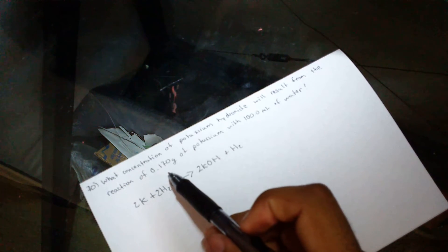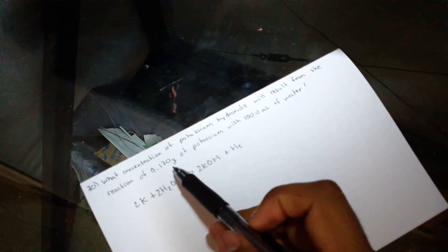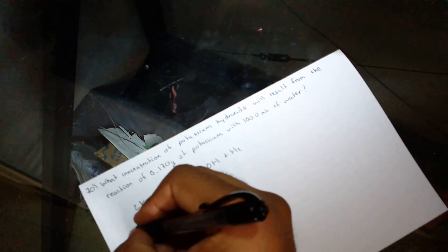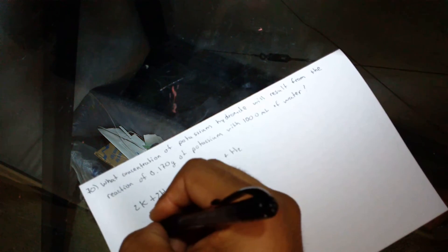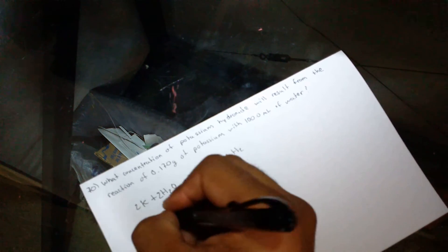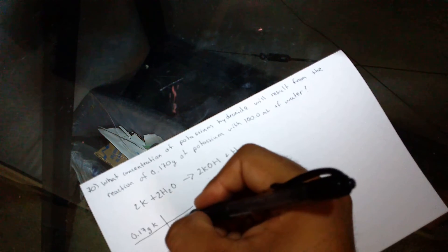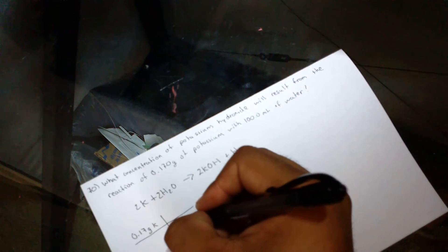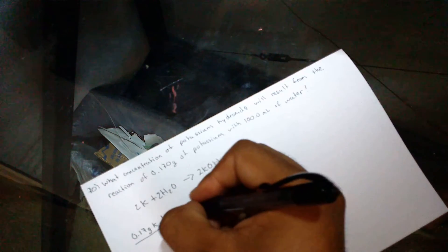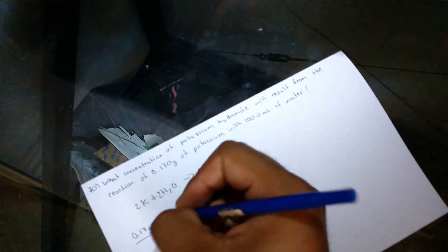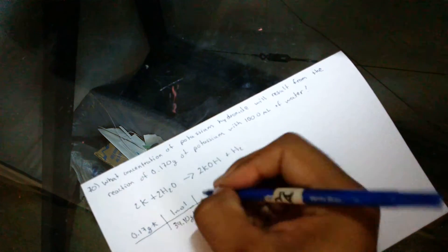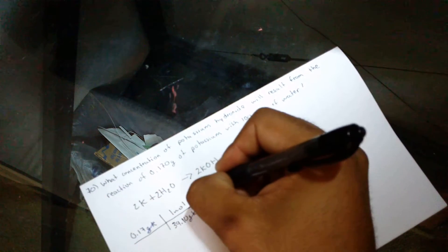So we know that we have 0.70 grams of potassium, right? The molar mass for potassium is 39.10 grams. So we can see that grams cancel grams, and we get 4.35.